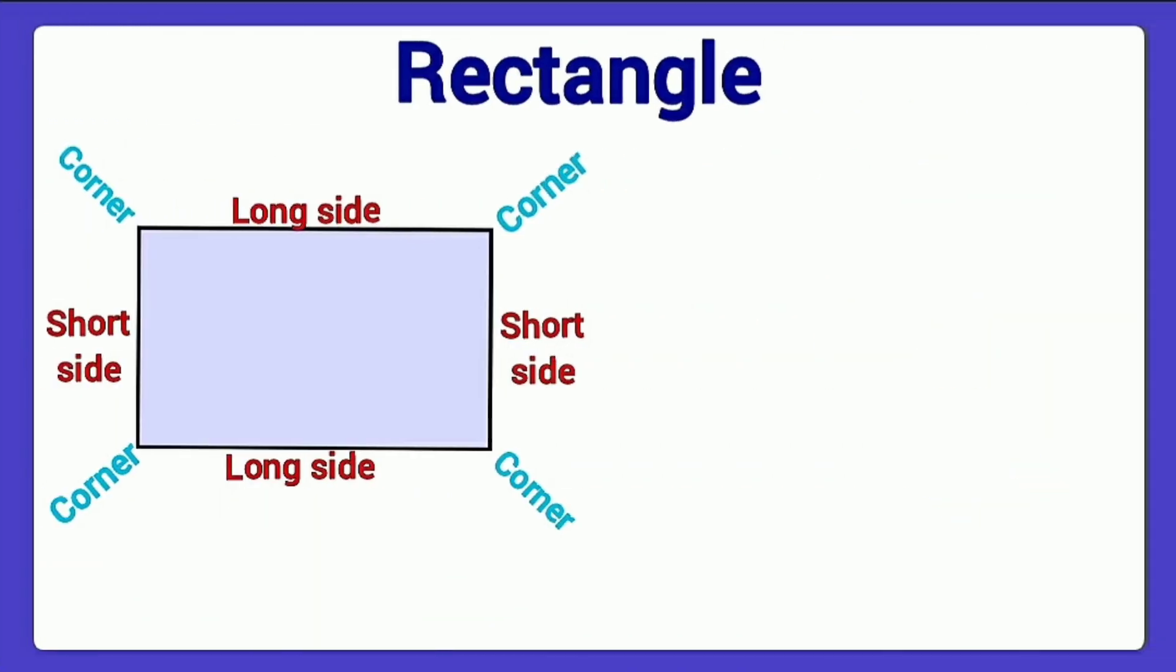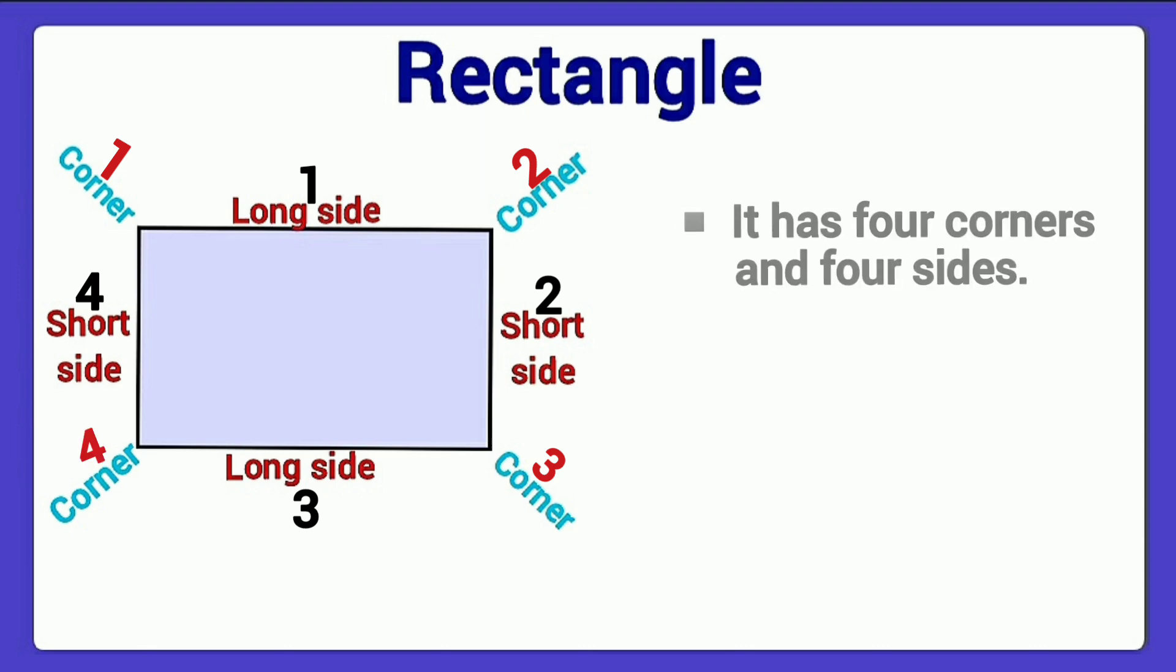Next one, rectangle. Count the sides. 1, 2, 3, 4. And how many corners? 1, 2, 3, 4. That is, rectangle has four corners and four sides.